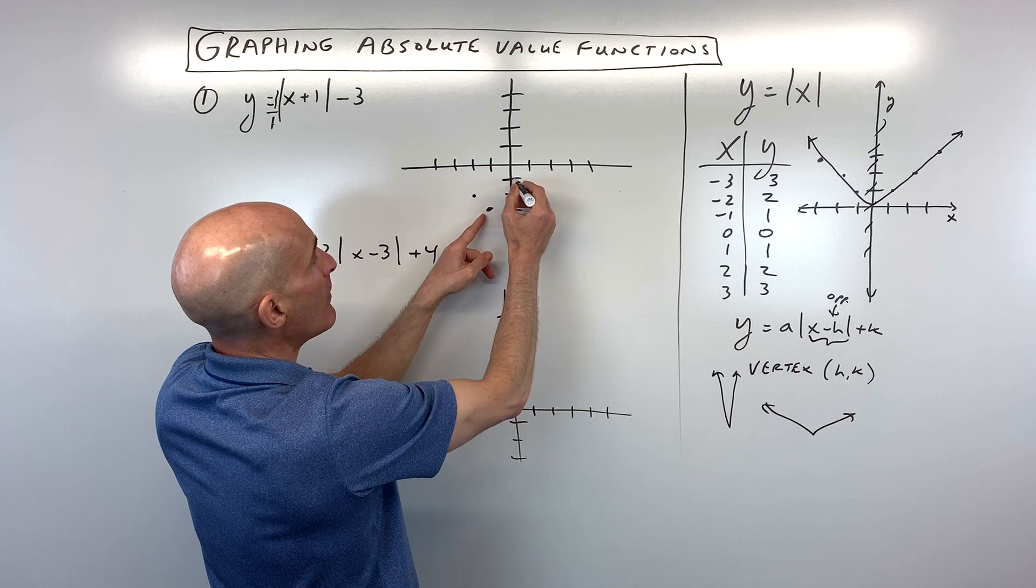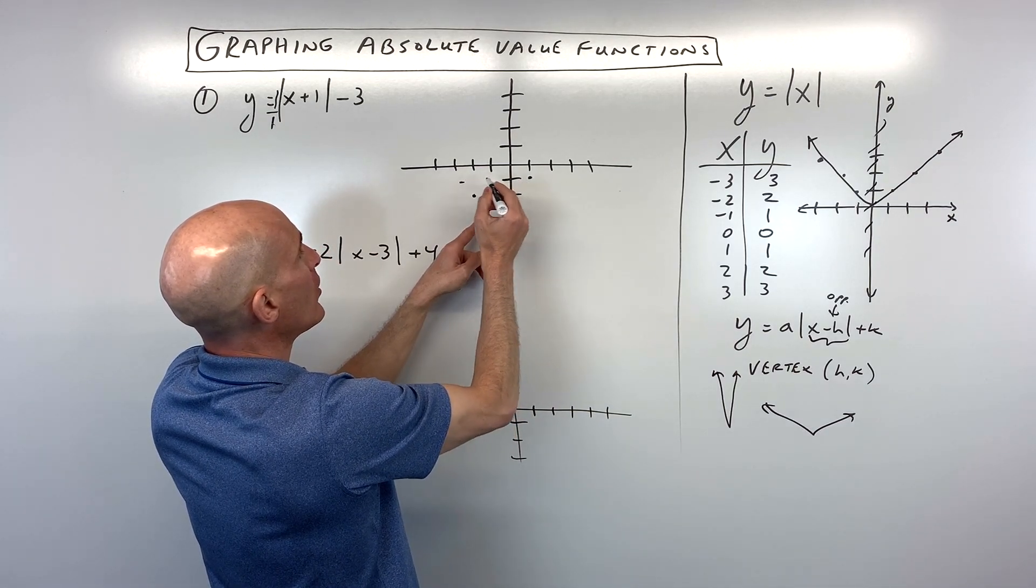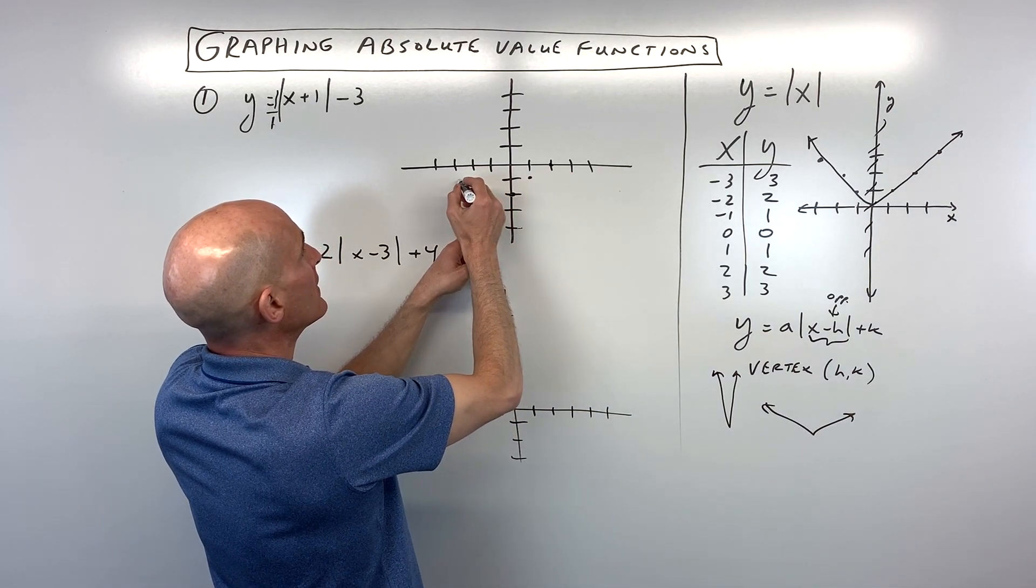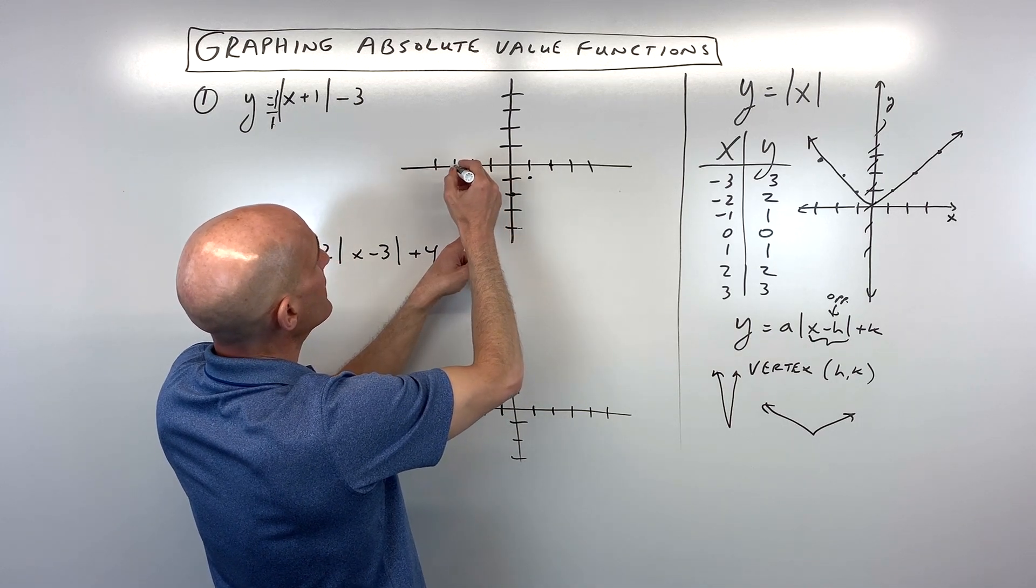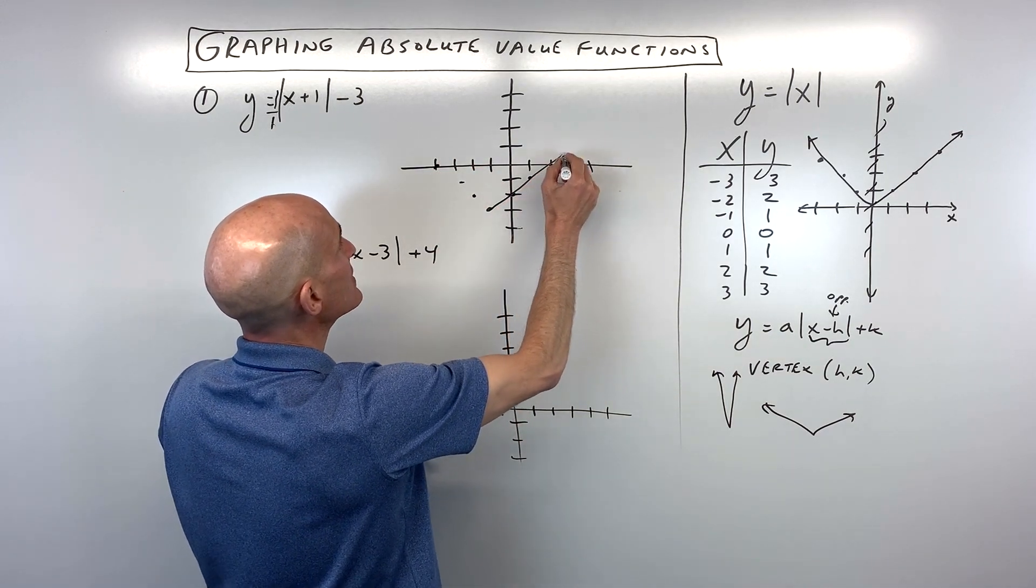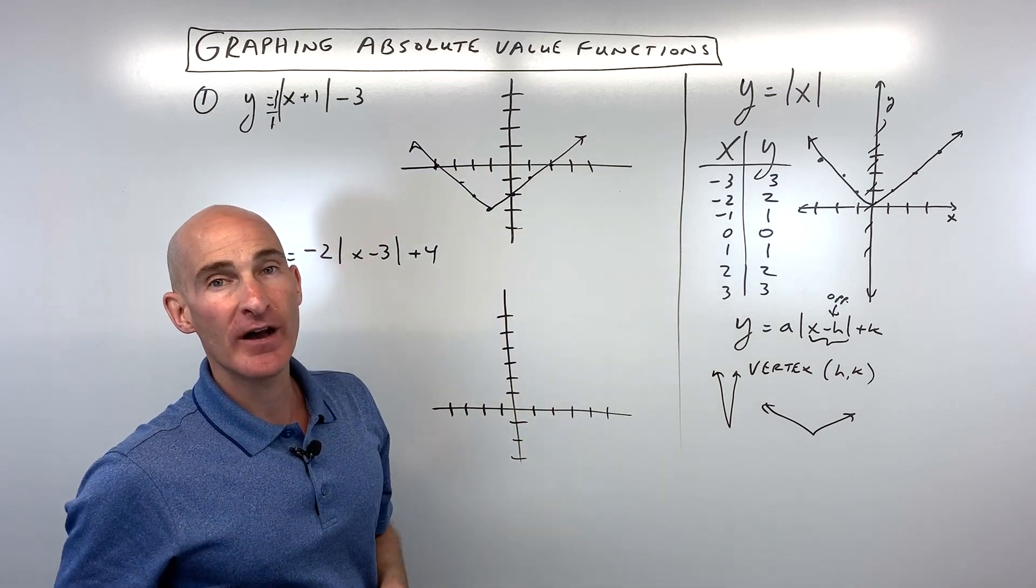And then we can continue, we can go up one over one, and same thing here, up one over one, and up one over one, and up one over one, etc. And so you can see you're going to get that real nice V-shape absolute value graph.